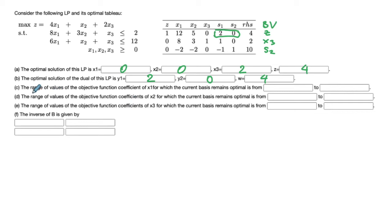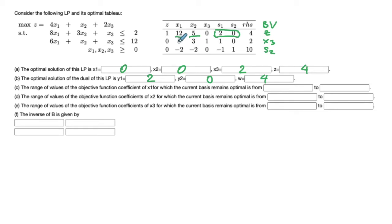The next three questions concern determining the ranges of the objective function coefficients for which the current basis remains optimal. The answer depends strongly on whether the variable is basic or non-basic. For non-basic variables x1 and x2, the answer is straightforward — we just look at the reduced cost. For x1 the reduced cost is 12, and for x2 it is 5. The reduced cost tells us by how much the coefficient needs to increase for the variable to enter the basis.